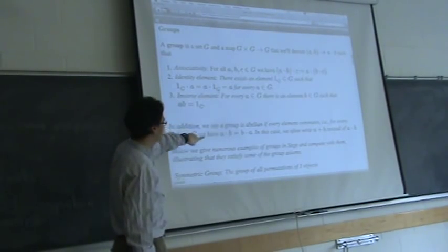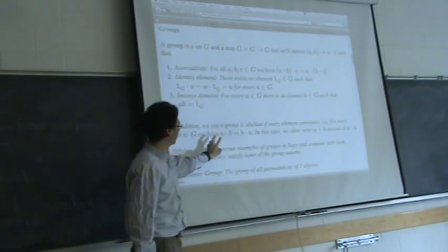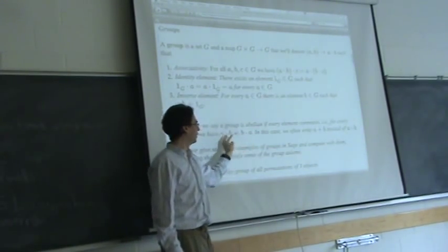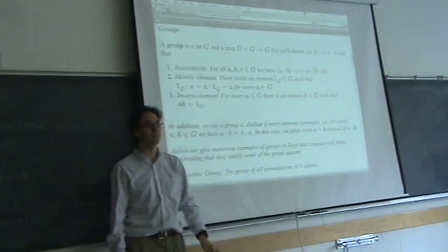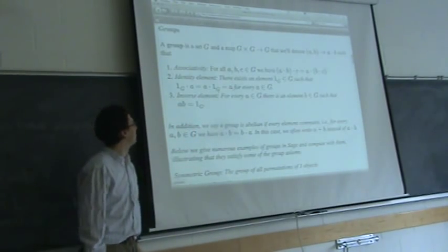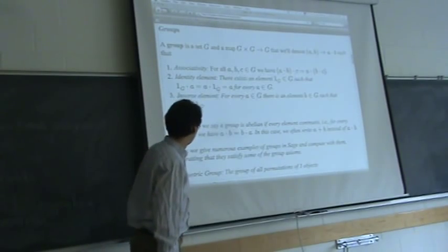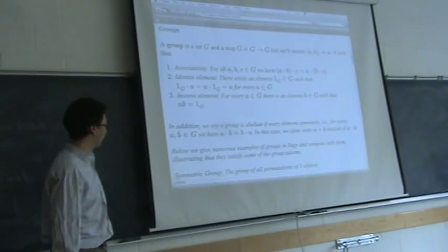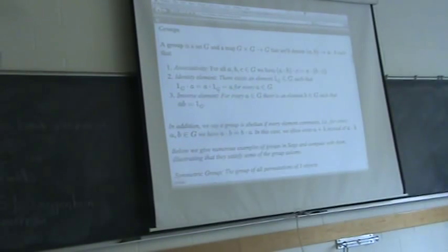There's one additional term. If you have a group and when you multiply an element you can multiply it in the other order and get the same answer, then you call the group abelian. We'll see examples that are and are not abelian in a moment.